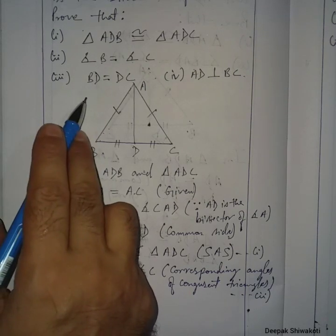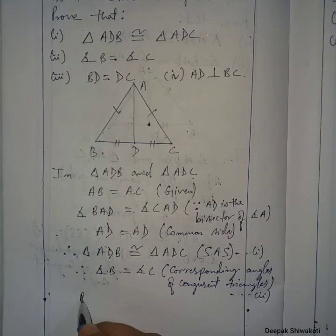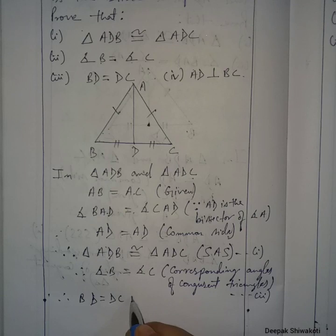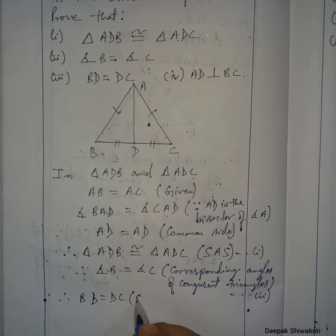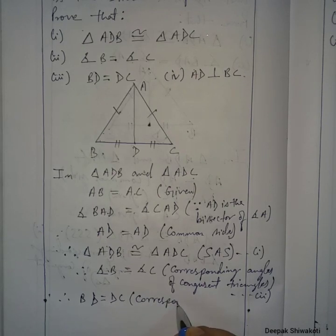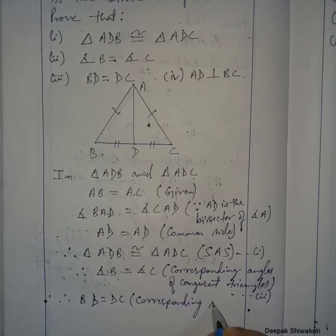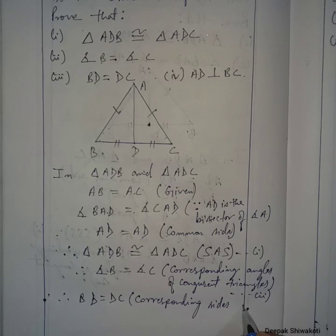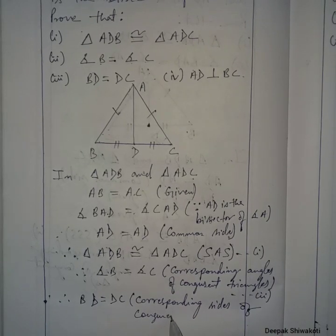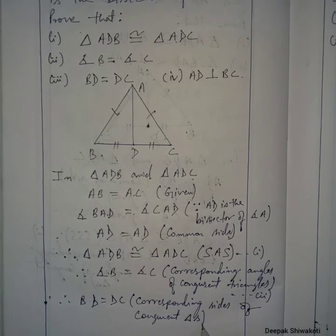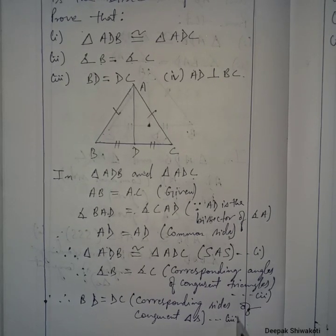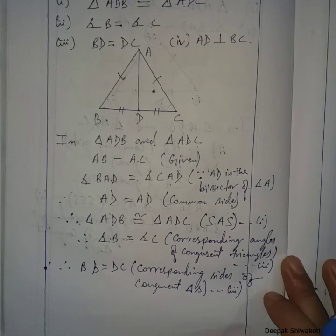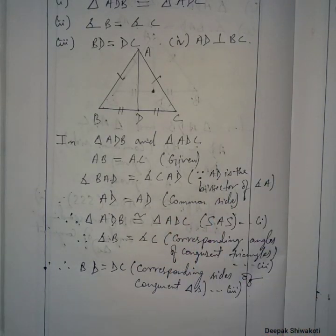Number three: BD equals DC. Therefore BD equals DC, and the reason is that they are corresponding sides of congruent triangles. This is number three.